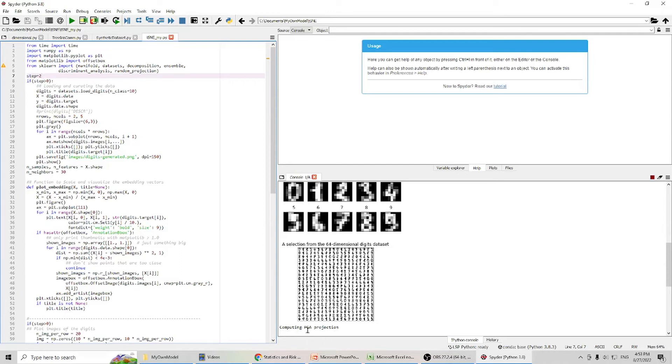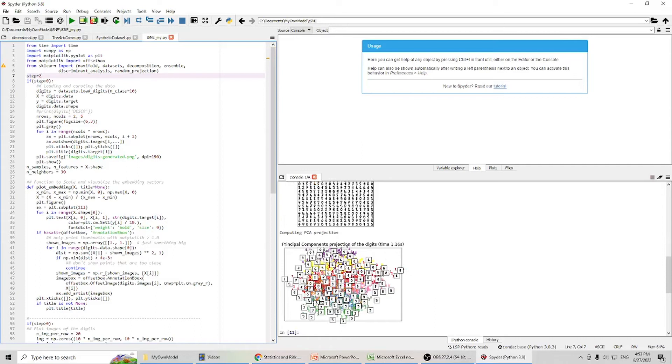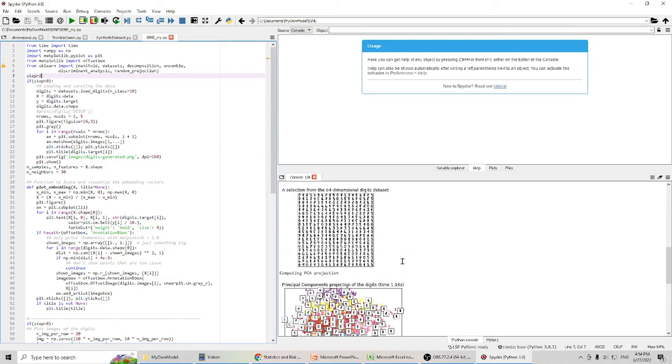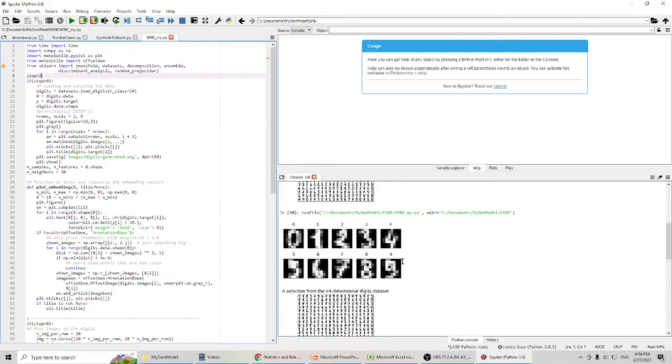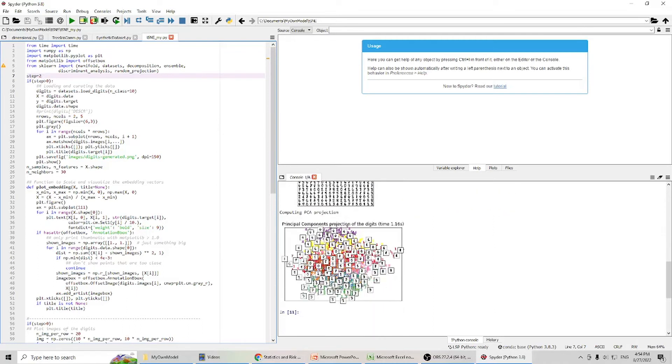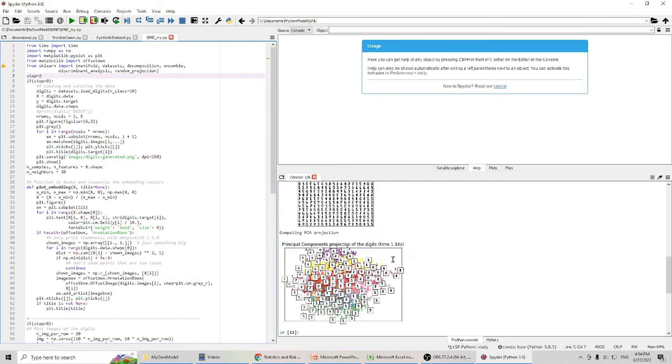Now, I'm computing PCA projection. You can see, this is the result of the PCA projection. You can see, I have 4 here and 6 here. But, a lot of overlap here. And, I spent 1.16 seconds for this PCA projection. So, we reduced the dimension from 64 to 2 dimensions. And, please remember, in this dataset, you can see, I pulled the data, put into X array.